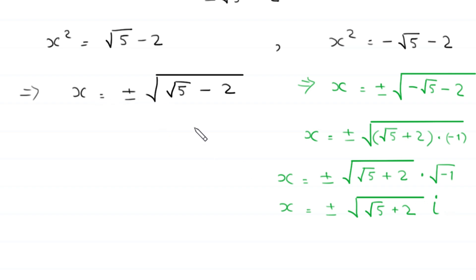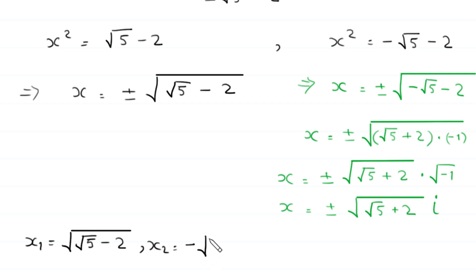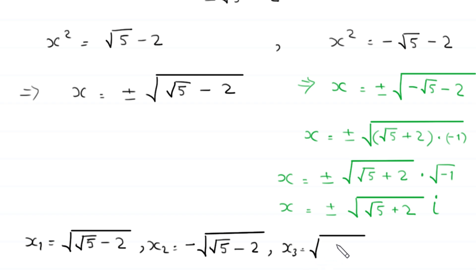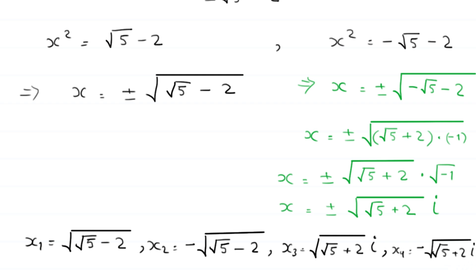From the real equation we get two values: x₁ = +√(√5 - 2) and x₂ = -√(√5 - 2). From the complex equation we get: x₃ = +√(√5 + 2) · i and x₄ = -√(√5 + 2) · i. These are the four solutions of this equation.